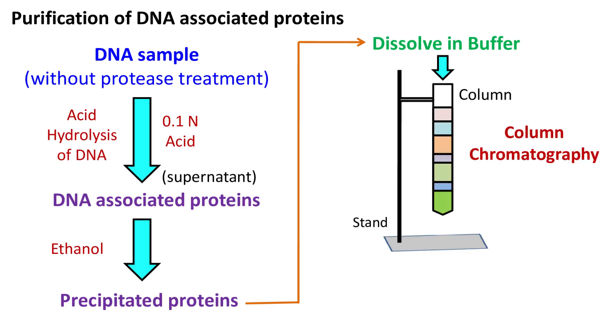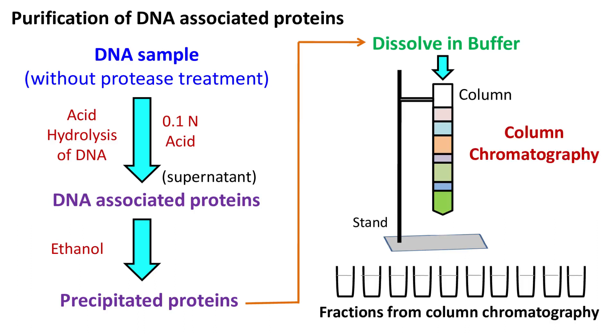The column chromatography showed purification of three major types of protein. So they were named as H1, H2, and H3.